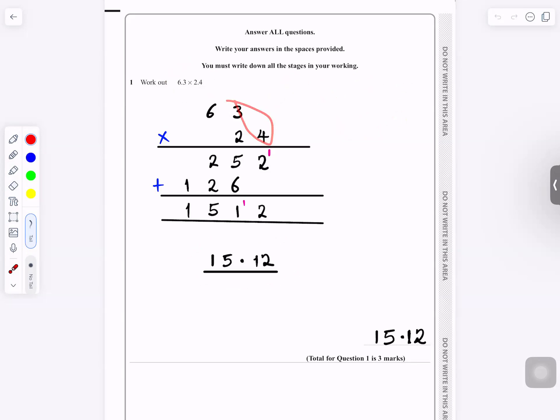So you do 3 times 4, it's 12. You write 2 and carry 1. 4 times 6 is 24 plus 1 is 25. And 2 times 3 is 6. And 2 times 6 is 12.